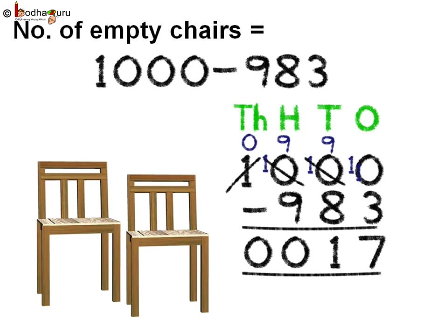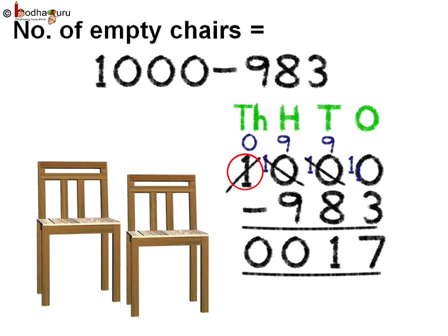Let us subtract: 1000 minus 983. Starting from the ones place, 0 minus 3 — as 3 is greater than 0 we cannot do the subtraction. We have to borrow from the neighbour. Let us take 1 from the tens place. Here the tens place is also 0, and the hundreds place is also 0. So we need to borrow from the thousands place. The thousands place has 1, so let us borrow 1 from there — it becomes 0.